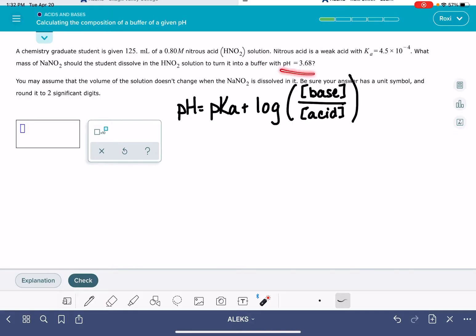First of all, the pH that we're going for in this problem is 3.68, so we'll plug in that desired pH, 3.68.